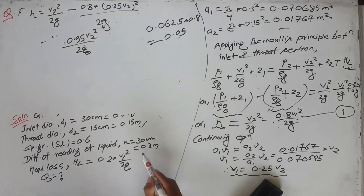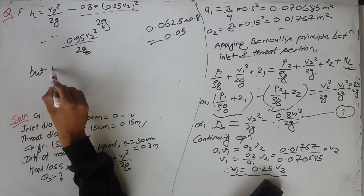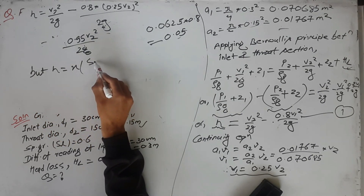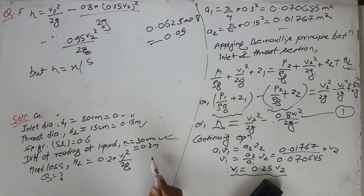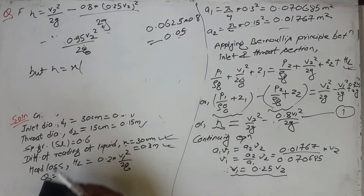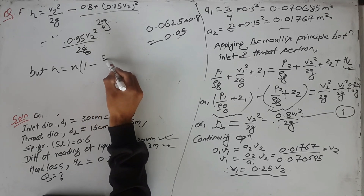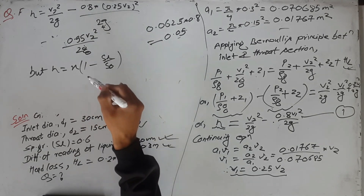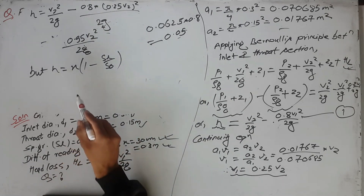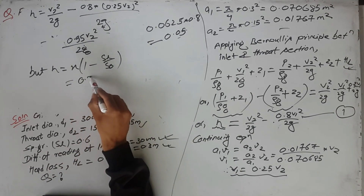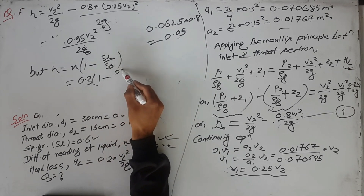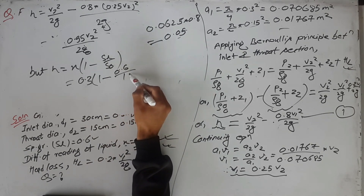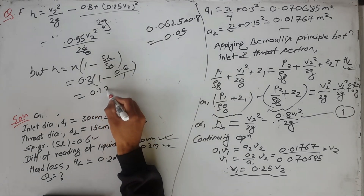Now we find the value of H from the manometer data. For an inverted U-tube manometer with a lighter liquid, the formula is H equals x times (1 minus SL upon S0), where x is the difference of reading, SL is the specific gravity of the lighter liquid, and S0 is the specific gravity of the flowing fluid. Substituting: H equals 0.3 times (1 minus 0.6 upon 1), which gives H equal to 0.12 meters.